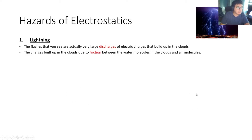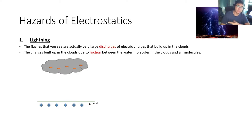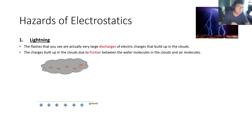The charges build up in the clouds due to friction between the water molecules in the cloud and the air molecules. So when you have a large cloud, the water molecules and the air molecules inside the clouds are moving against each other, hitting each other. There's a lot of friction happening, and because of that, charge can build up in the cloud.